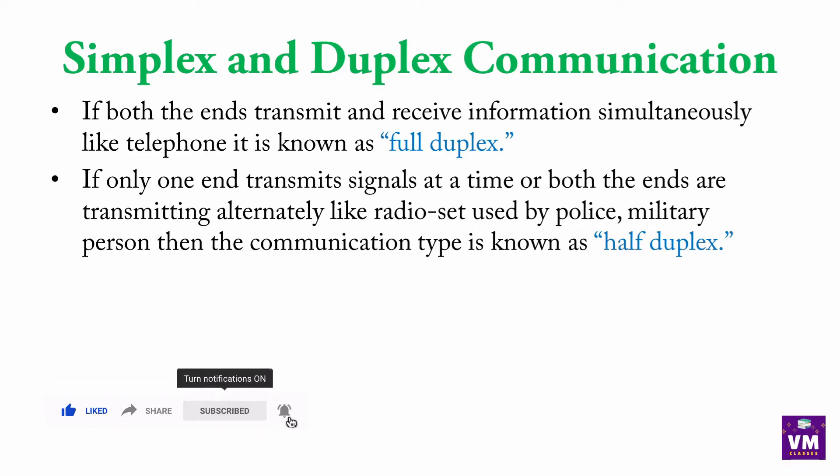Agar us system se hum dono side se communication kar bhi sakte hai, but ek side se ek time mein communication kiya jata hai, to use bolte hai half duplex. Dono side se hum same time mein nahi kar sakte. Agar maine A point se communication kiya hai, to uska complete hone ke baad hi hum B point se kar sakte hai — use bolte hai half duplex communication.